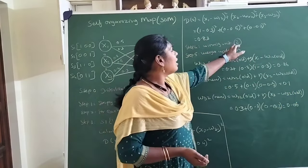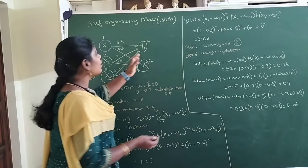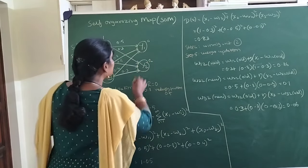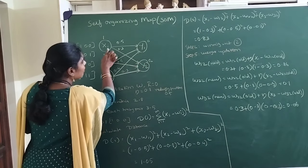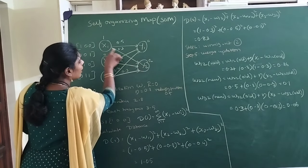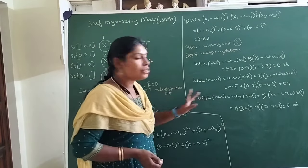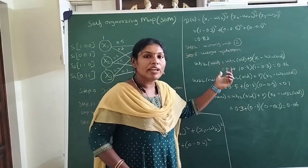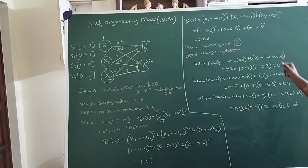After getting the winning cluster unit, we proceed with weight updation to bring the weights closer to the input. The links connected to cluster 2 — weights w12, w22, and w32 — need to be updated. The weight updation formula is: new weight equals old weight plus learning rate multiplied by (input minus old weight vector).